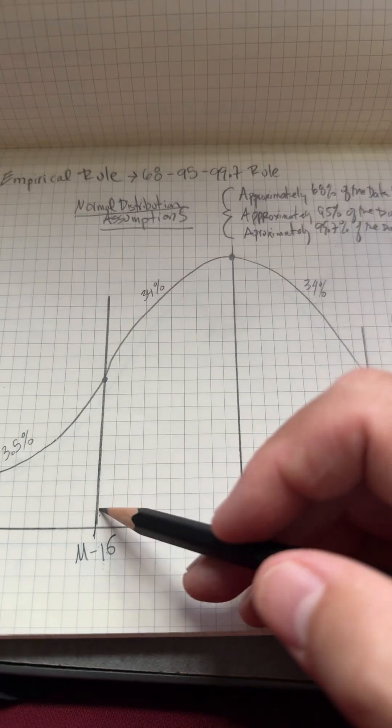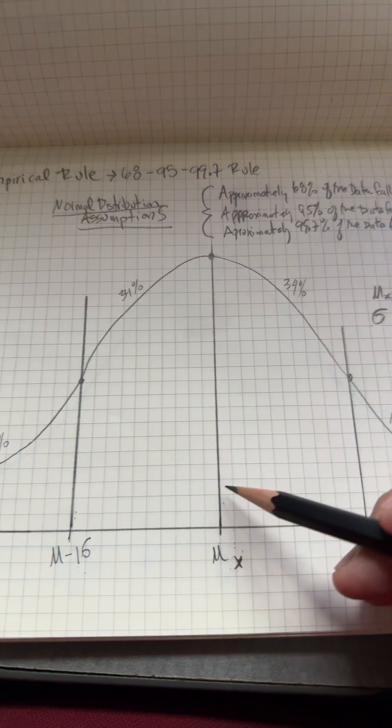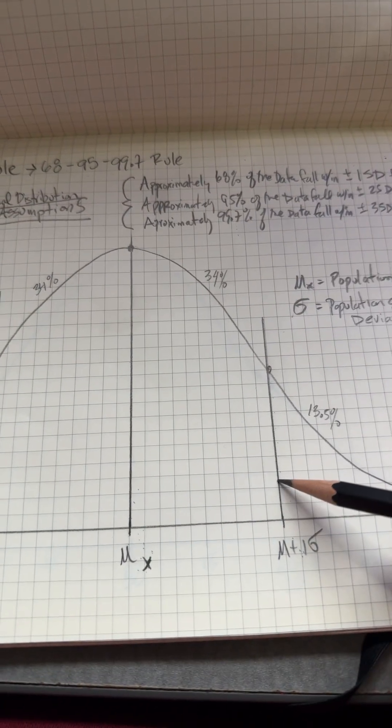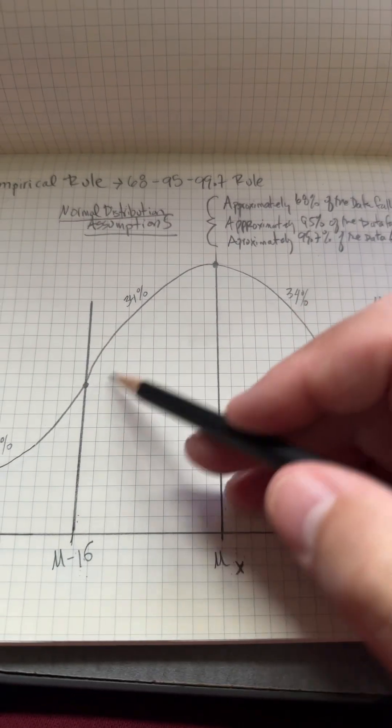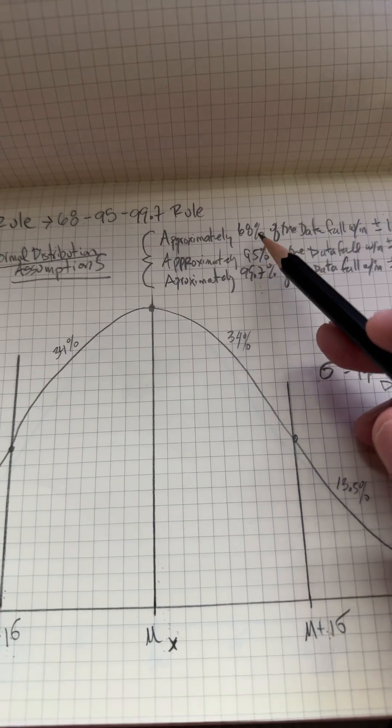And then if you're below the population mean by one standard deviation, and you're above the mean by positive one standard deviation, all this area under the curve is 60 percent.